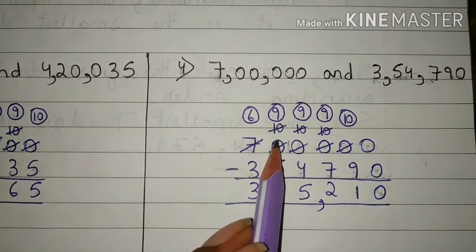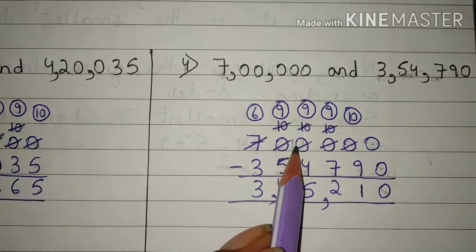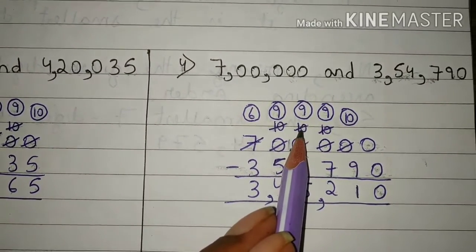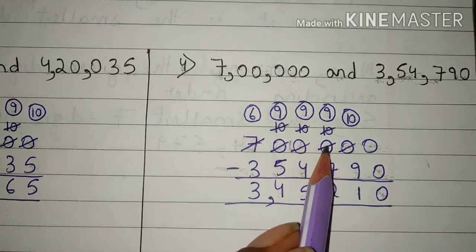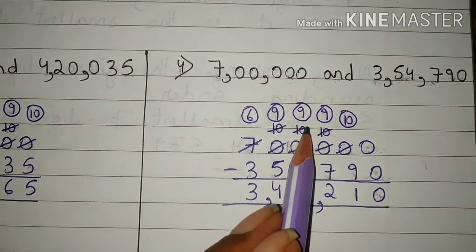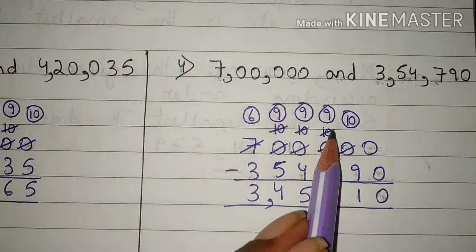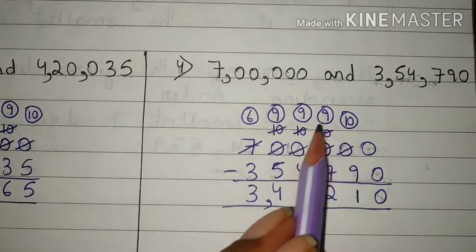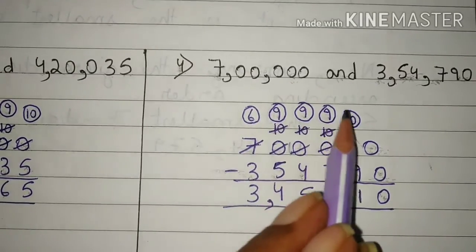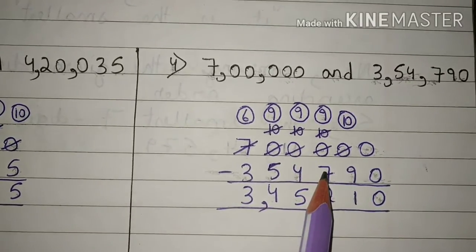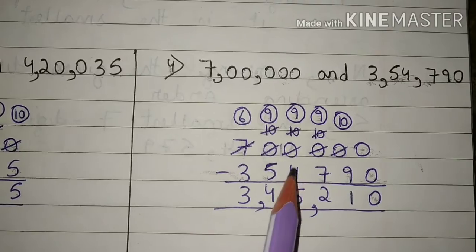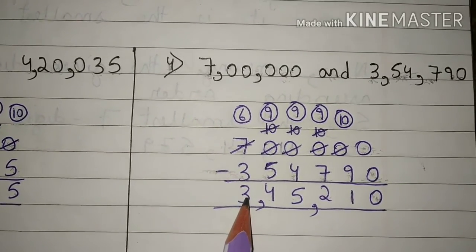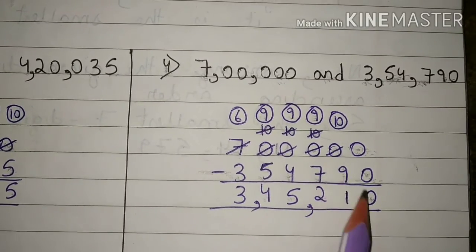Again we will borrow one number from ten to this zero. Now this zero will become ten and this ten will become nine. Again we will borrow one number from ten to this zero. Now this zero will become ten and this ten will become nine. Again we will borrow one from ten; this ten will become nine. Ten minus nine is one. Nine minus seven is two. Nine minus four is five. Nine minus five is four. Six minus three is three. The answer is 3,45,210.